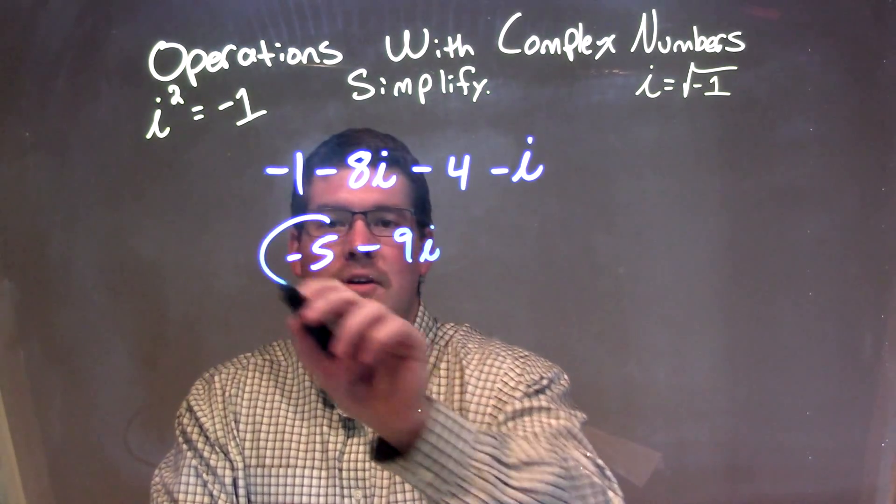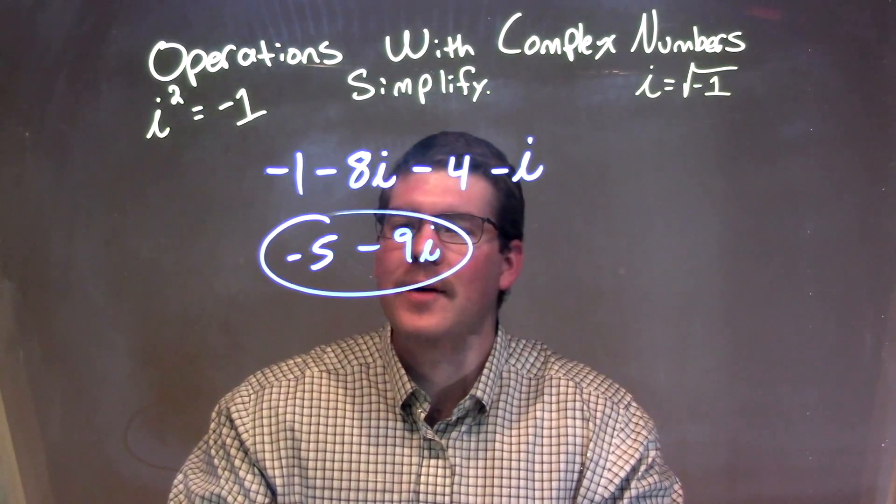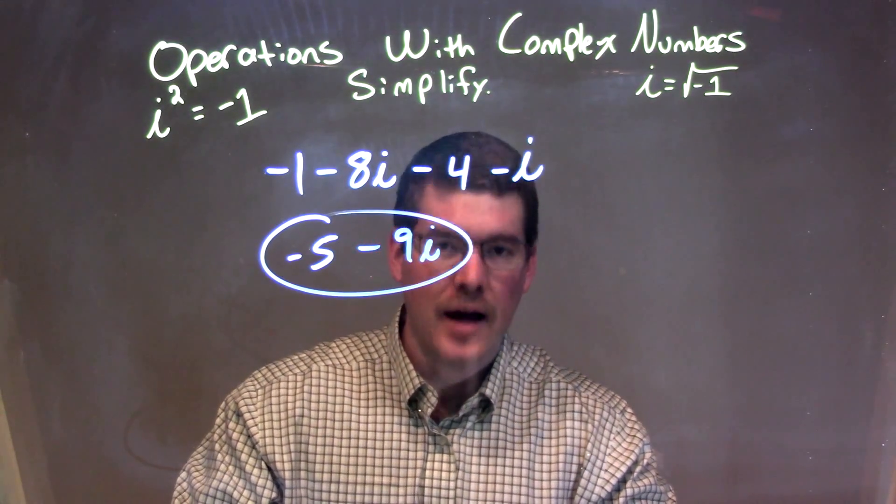So our final answer here, nothing else we can do to simplify, is negative 5 minus 9i.